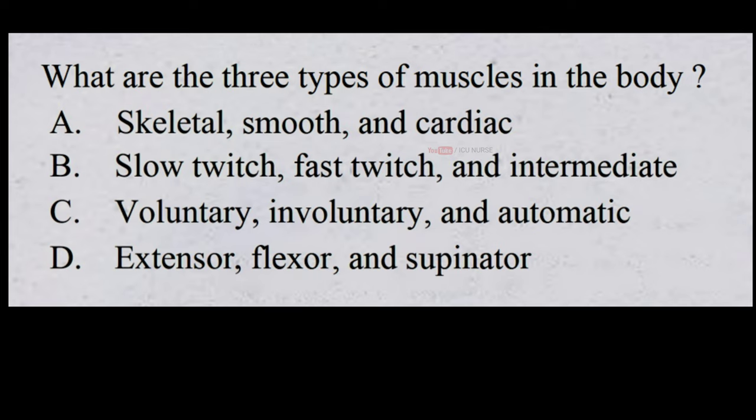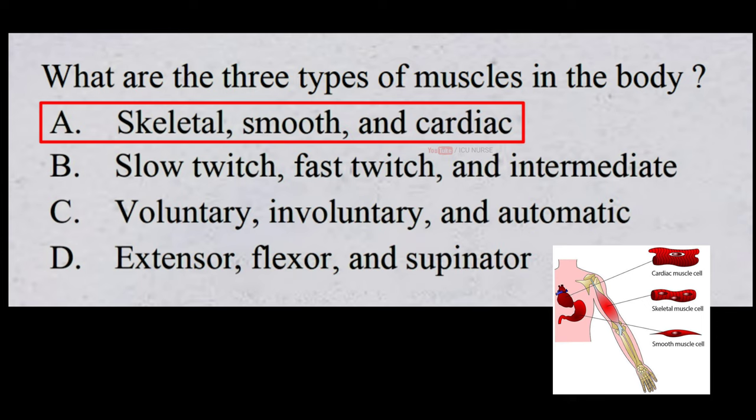What are the three types of muscles in the body? A. Skeletal, smooth and cardiac. B. Slow twitch, fast twitch and intermediate. C. Voluntary, involuntary and automatic. D. Extensor, flexor and supinator. And the correct answer is A. Skeletal, smooth and cardiac.